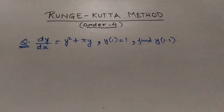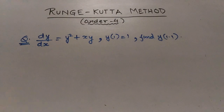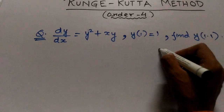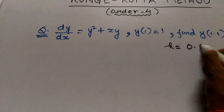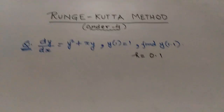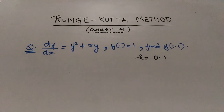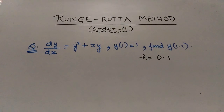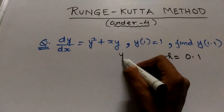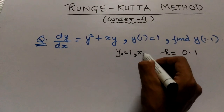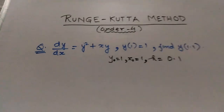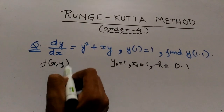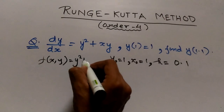Seeing the question, the first thing is to assume the value of h. So let us assume h equals 0.1, so we have to make only one iteration, which will make our problem a bit shorter. Our y_0 is 1, x_0 is 1, and our function is y² + xy.